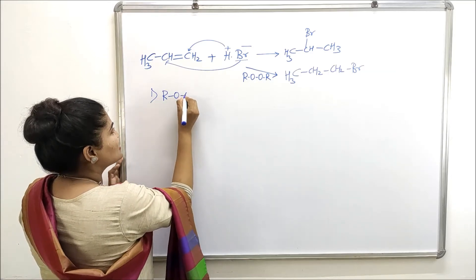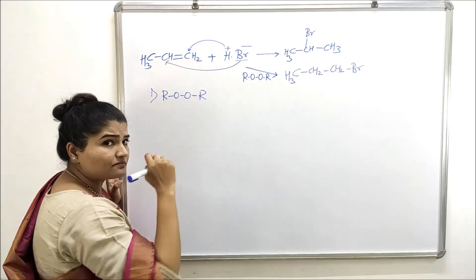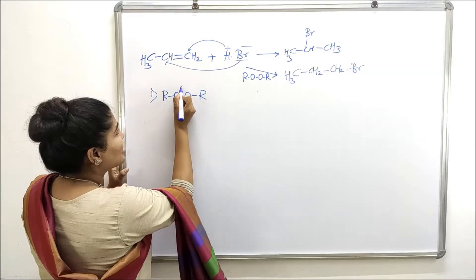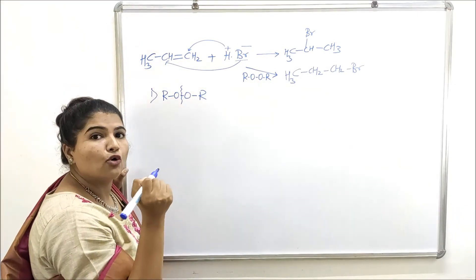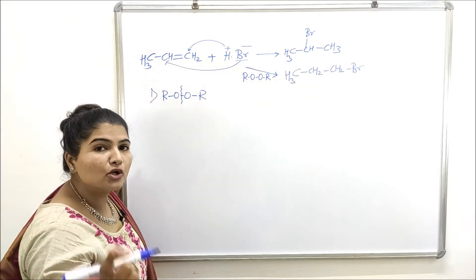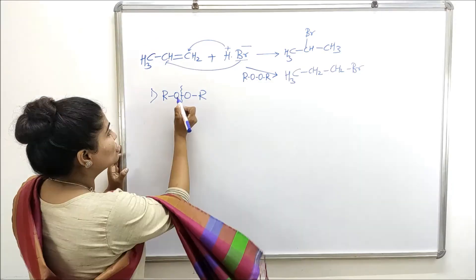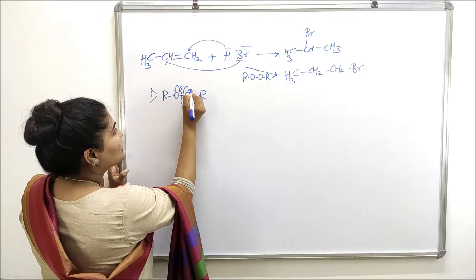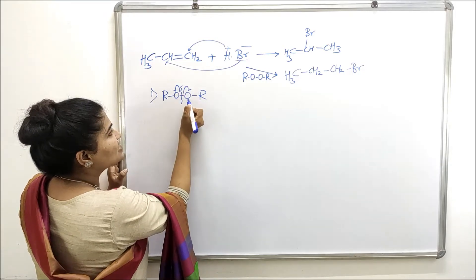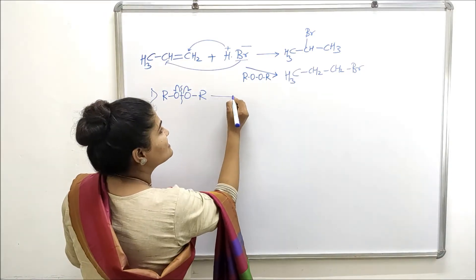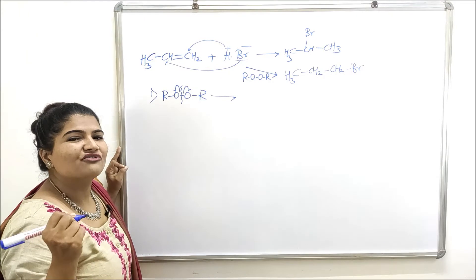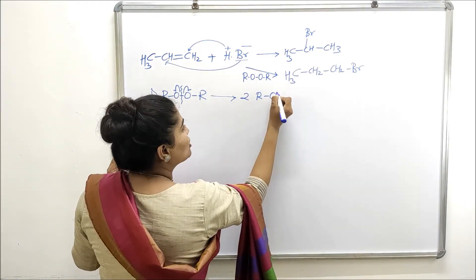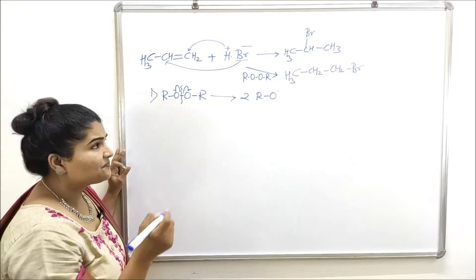In the first step, we have the organic peroxide R–O–O–R. This organic peroxide breaks homolytically. As you know, in homolytic fission the two electrons are shared equally — one electron goes to each side — leading to the formation of free radicals. In this case you get two alkoxy free radicals.